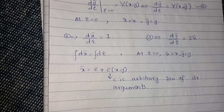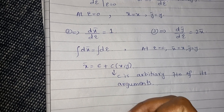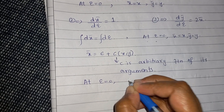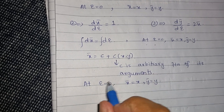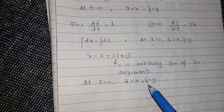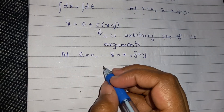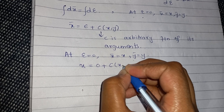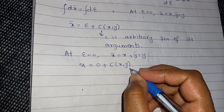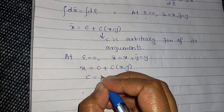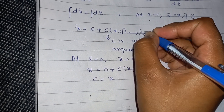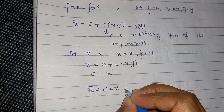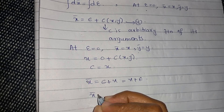Now we impose the initial conditions: at ε = 0, x̄ = x and ȳ = y. Substituting ε = 0 into x̄ = ε + c(x,y) gives x = 0 + c(x,y), so c = x. Replacing back into equation 4, we get x̄ = x + ε. This is the value of x̄.